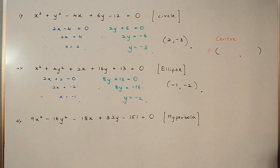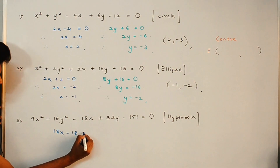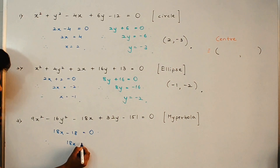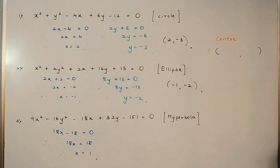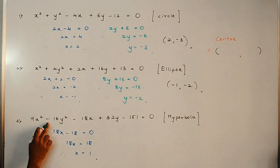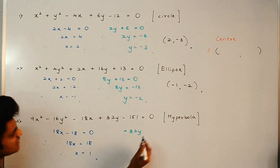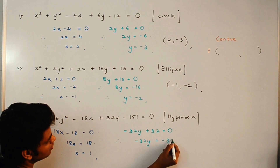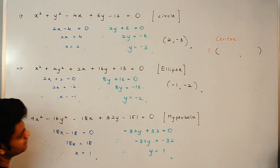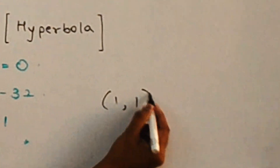For the hyperbola, differentiate x-terms with respect to x: 9x² derivative is 18x, and −18x derivative is −18. So 18x = 18, hence x = 1. For the y-coordinate, −16y² derivative is −32y, and +32y derivative is +32. So −32y = −32, therefore y = 1. Hence the center of the hyperbola is (1, −1).